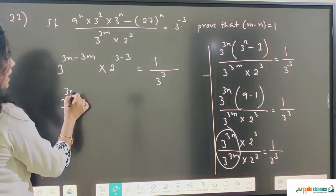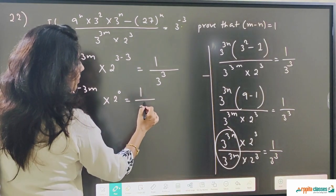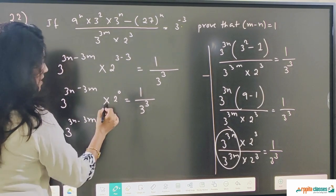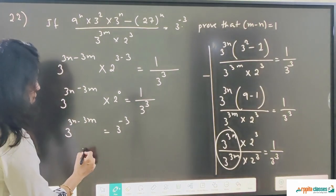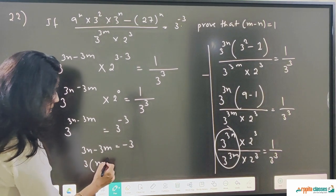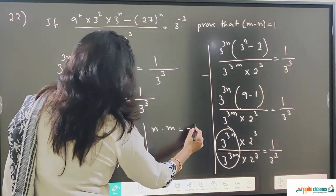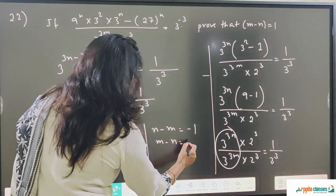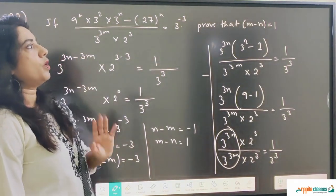So now 3 to the power 3n minus 3m, into 2 to the power 0 which is 1, equals 1 upon 3 cubed. If I take the 3 to the power 3 up, the bases are same so we can equate powers: 3n minus 3m equals minus 3. Taking 3 common: n minus m equals minus 1, therefore m minus n equals 1. I just multiplied everything by minus 1. So we get m minus n equals 1, and that is what we had to prove.